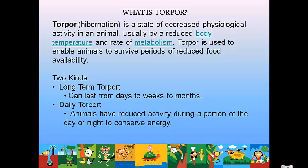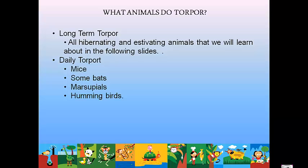There are two kinds of torpor. Long-term torpor can last from days to weeks to months — this is where hibernation and estivation come in. Daily torpor is when an animal reduces its activity during a particular time of day to conserve energy or water. Mice burrow into their burrows during the day to reduce their need for food. Bats hang in caves during the day, bringing down body temperature, heart rate, and breathing to save energy. Marsupials and hummingbirds also perform daily torpor.